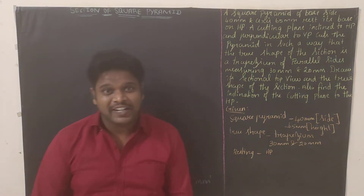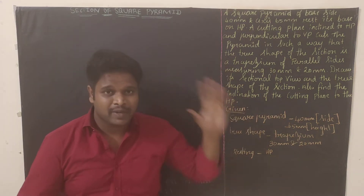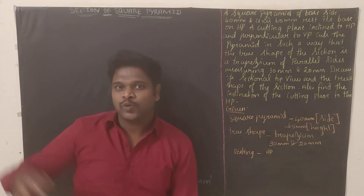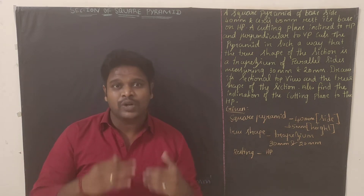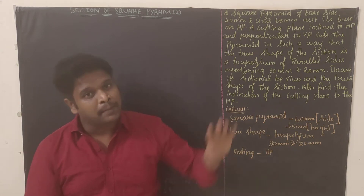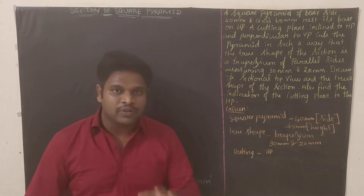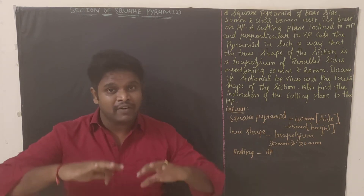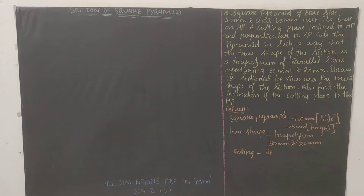Hello friends, welcome to our channel Mechanical Motivator. In this video we're going to see a problem on section of a square pyramid. I will explain the question, then the given data, and we will solve the problem step by step. Follow all the instructions so that it will be easy to complete the diagram and get full 20 marks. This sum comes under unit 4, section of solids. About 12 problems have been uploaded previously — kindly have a glance at those.